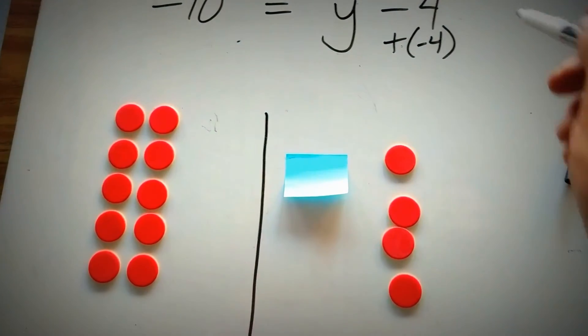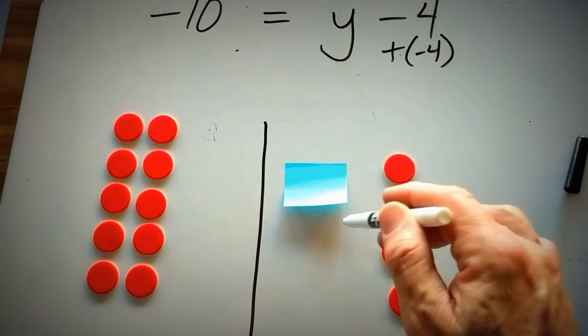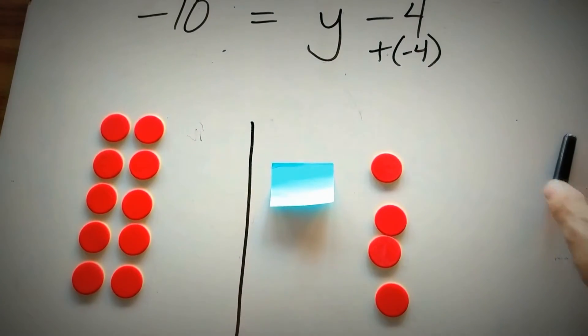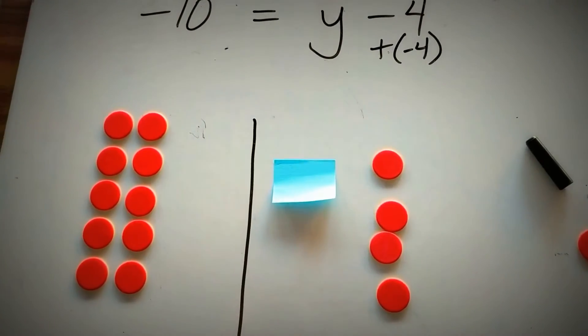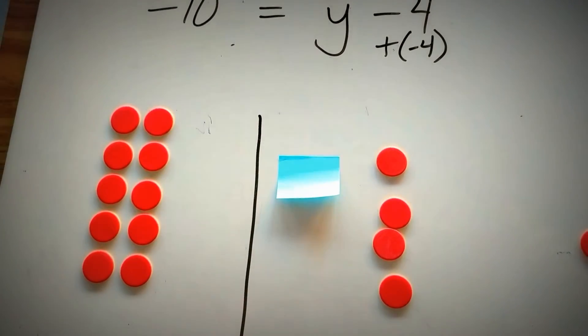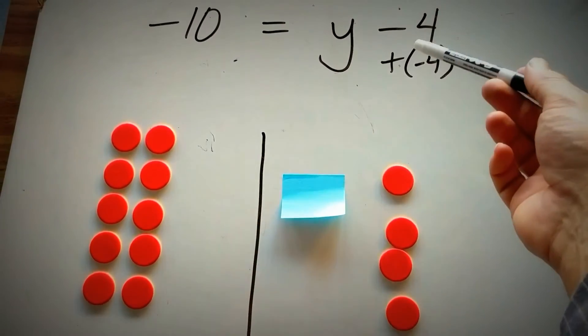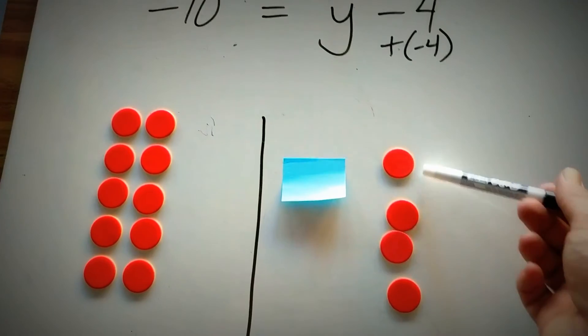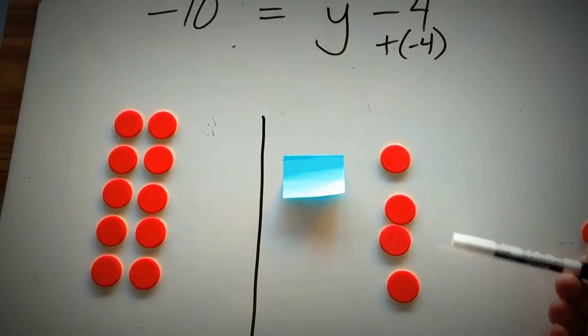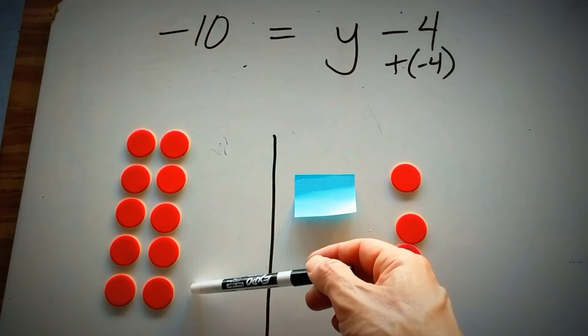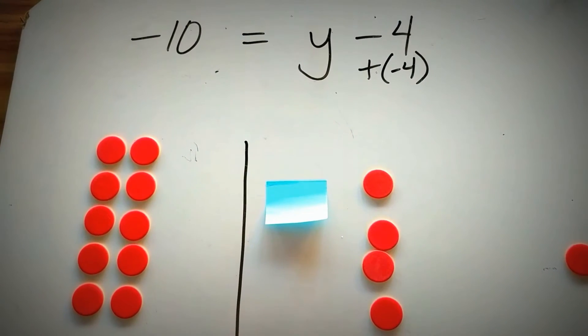So don't get confused with putting 4 positives down and then putting a subtraction sign in. I saw many students doing this, and that is a recipe for making a mistake. So make sure you recognize this as a negative 4. So there are negative 4 counters here and a negative 10 counters on our left-hand side of the equation.